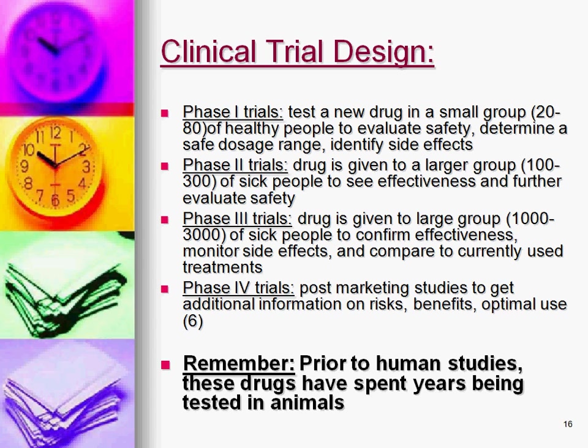Phase two trials are given to a larger group of volunteers, and those are usually people who have the disease we're trying to treat — to see effectiveness. That's the primary thing: to see if it actually works.